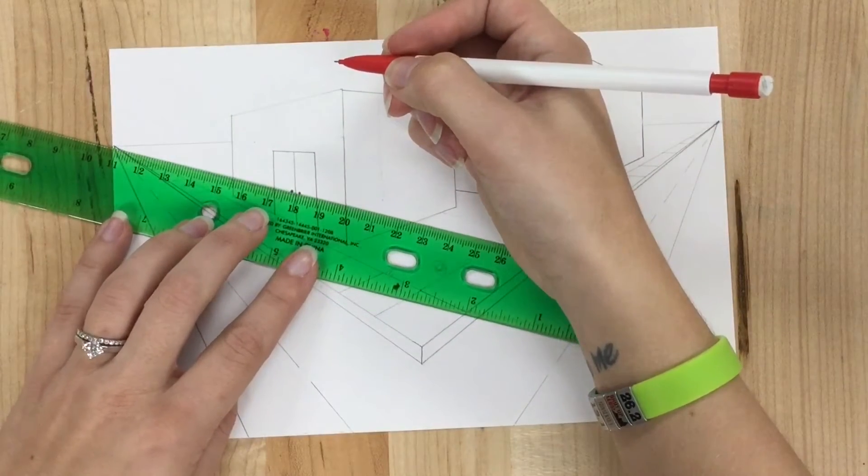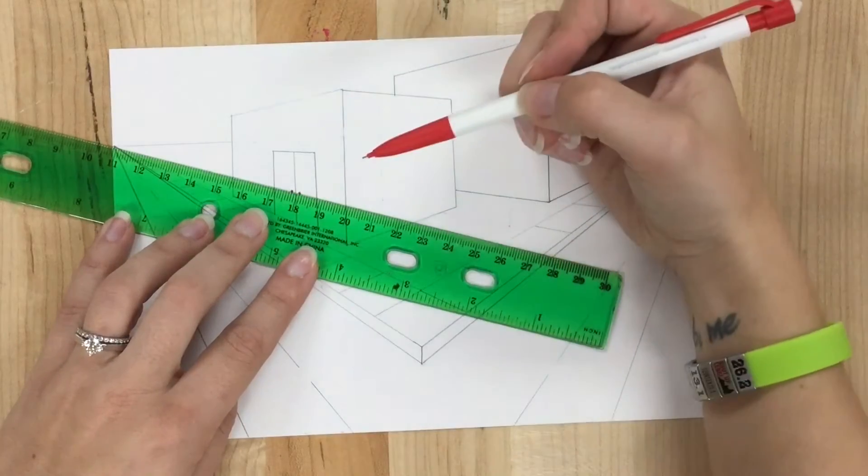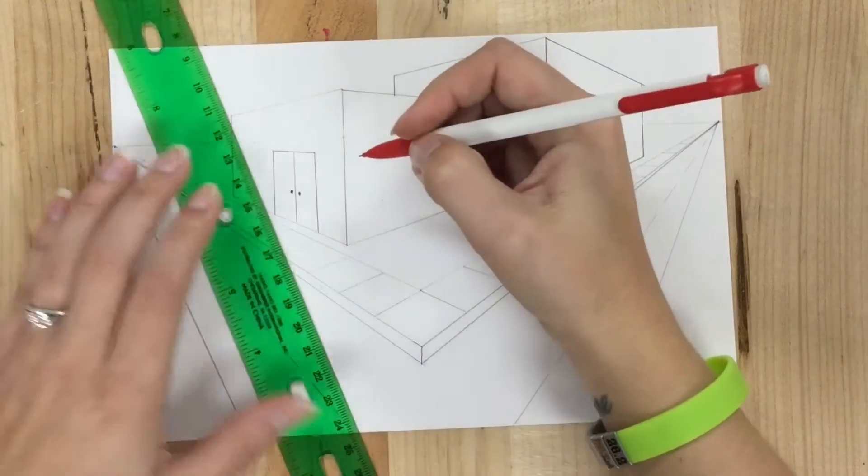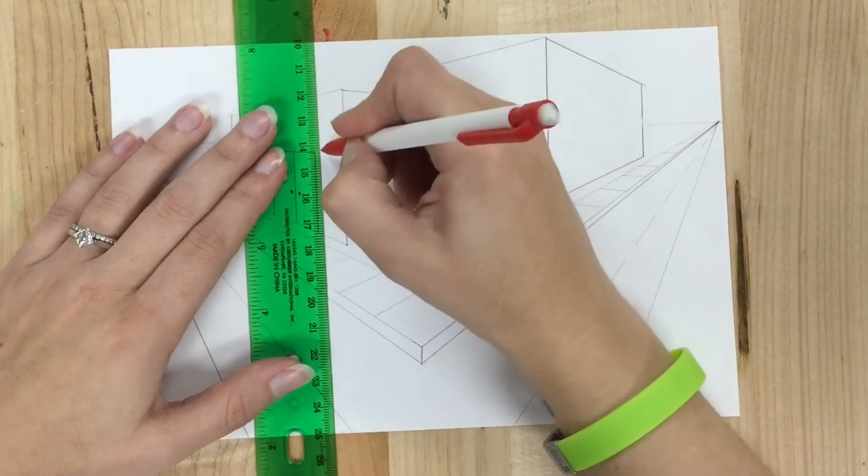My door handles, I should check those. They're on a line that comes from my vanishing point. If I want to put a frame on it, just do the same thing right outside.